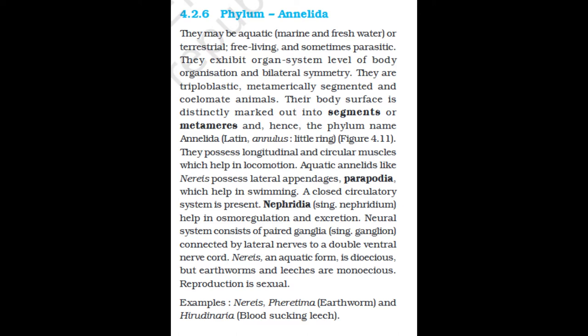Section 4.2.6: Phylum Annelida. They may be aquatic (marine or freshwater) or terrestrial, free-living and sometimes parasitic. They exhibit organ system level of body organization and bilateral symmetry. They are triploblastic, metamerically segmented, and coelomate animals. Their body surface is distinctly marked into segments or metameres — hence the phylum name Annelida (Latin: annulus, little ring). They possess longitudinal and circular muscles that help in locomotion. Aquatic annelids like Nereis possess lateral appendages, parapodia, which help in swimming. The closed circulatory system is present. Nephridia help in osmoregulation and excretion. Nereis is dioecious but earthworms and leeches are monoecious. Reproduction is sexual. Examples: Nereis, Pheretima (earthworm), and Hirudinaria (blood-sucking leech).